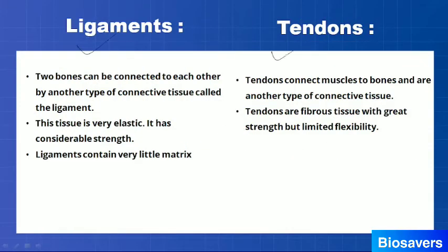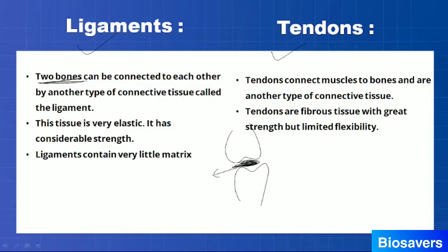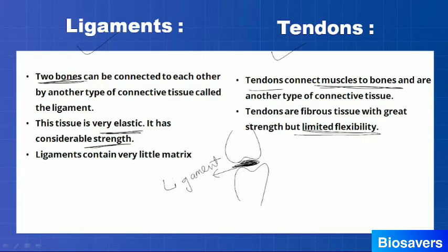Areolar tissue has two components: tendons and ligaments. Ligaments connect two bones — they fill the spaces between two bones, are very elastic, and have considerable strength but very little matrix. Tendons connect muscles to bones. Tendons have great strength but less flexibility. So ligaments connect bone to bone, while tendons connect muscle to bone.